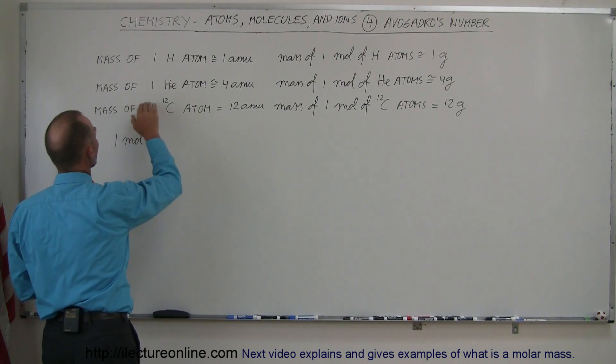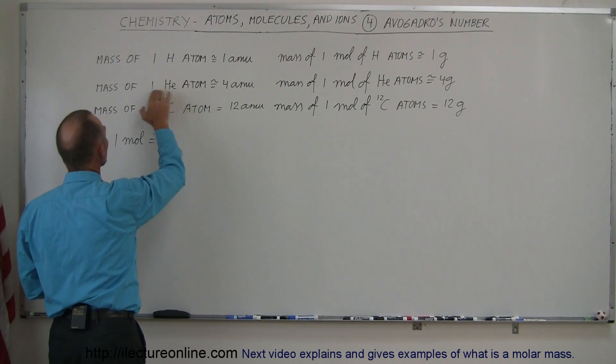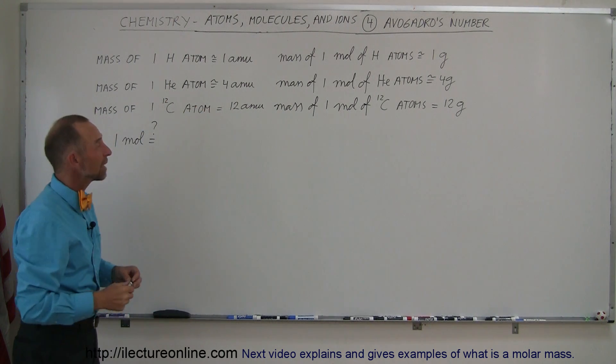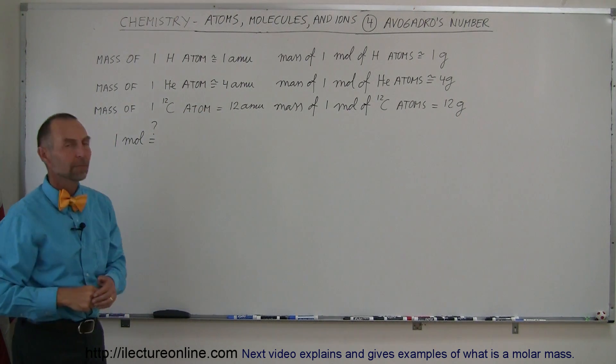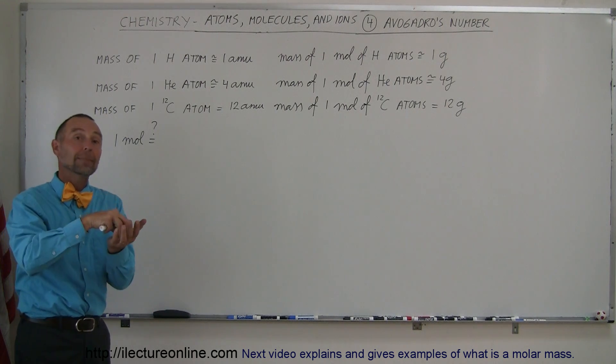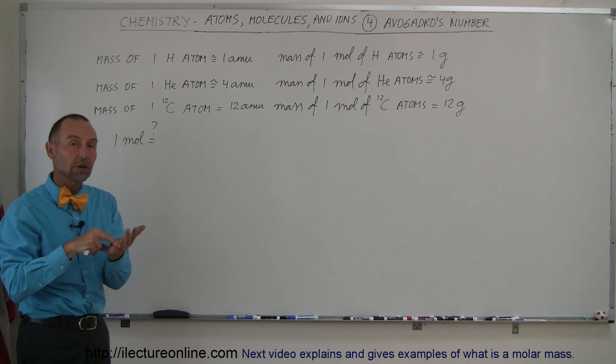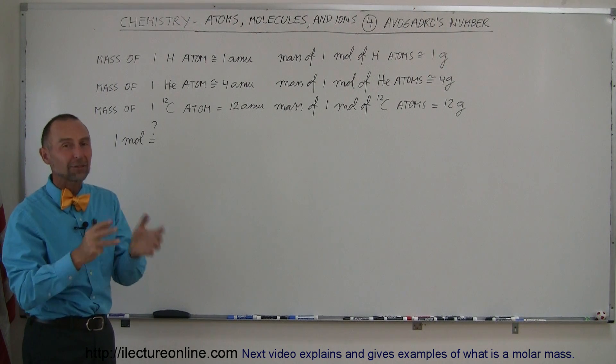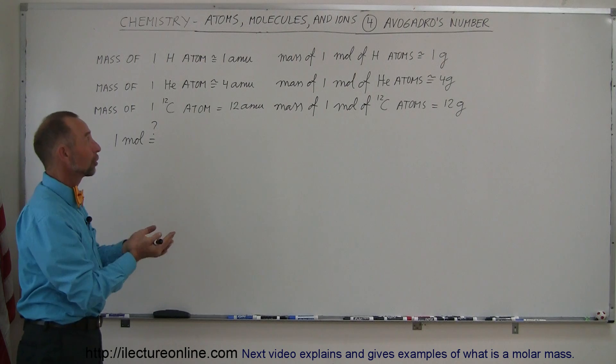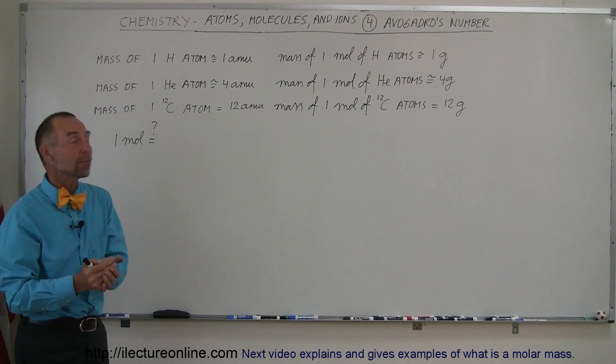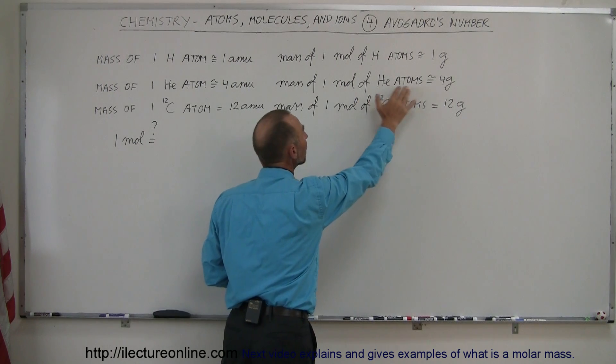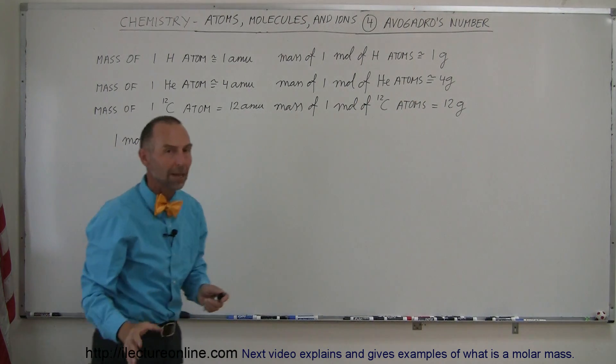Likewise, if we had a single helium atom, the mass of a single helium atom would be about four atomic mass units. AMUs are atomic mass units. The reason for that is because a helium atom has two protons and two neutrons in its nucleus. That's a total of four nucleons. Since each proton and each neutron has a mass of about one AMU, the four together have a mass of four AMUs. And if you have a whole mole of them, the mass of a mole of helium atoms would be four grams.